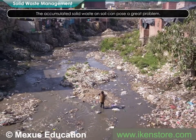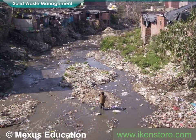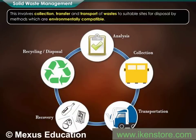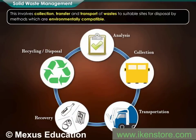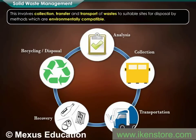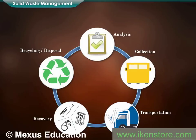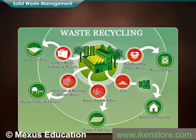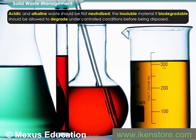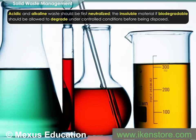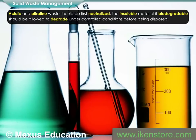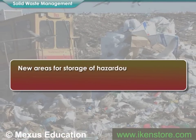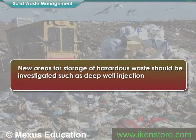The accumulated solid waste on soil can pose a great problem. Hence, proper methods should be adopted for management of solid waste disposal. This involves collection, transfer, and transport of wastes to suitable sites for disposal by methods which are environmentally compatible. Industrial waste can be treated physically, chemically, and biologically until they are less hazardous. Acidic and alkaline waste should be neutralized. The insoluble material, if biodegradable, should be allowed to degrade under controlled conditions before being disposed. New areas for storage of hazardous waste should be investigated such as deep well injections and more secure landfills.